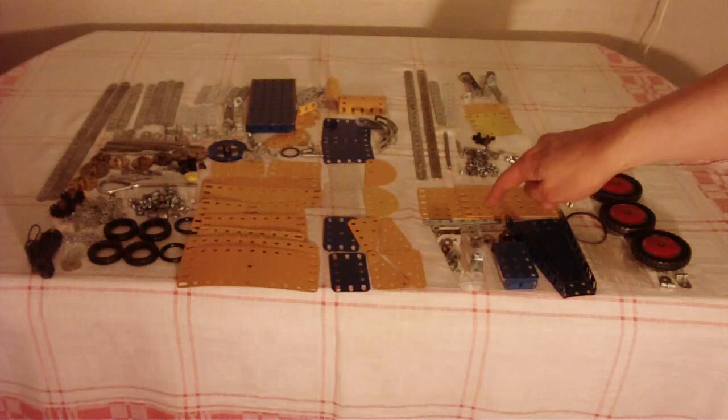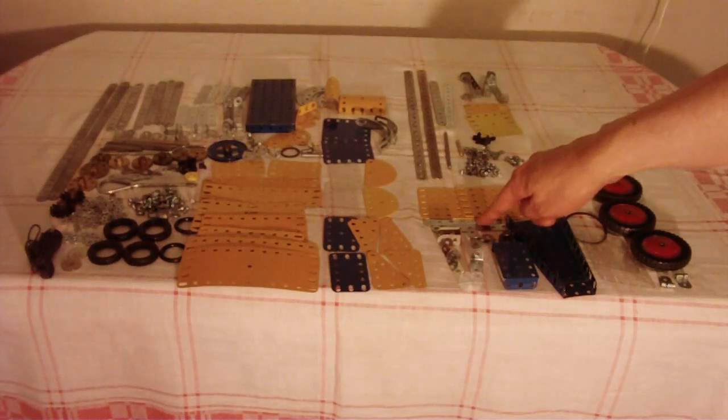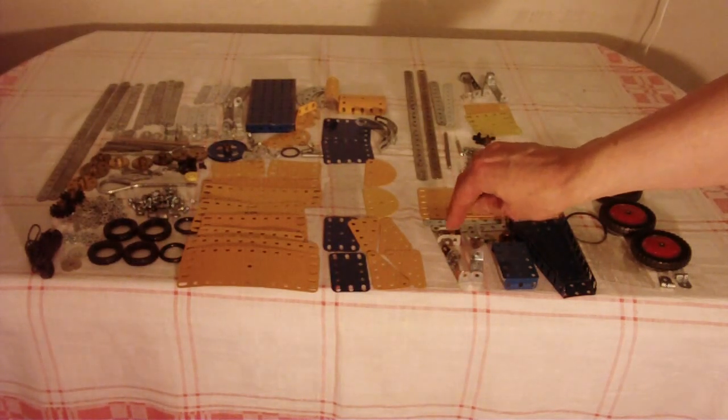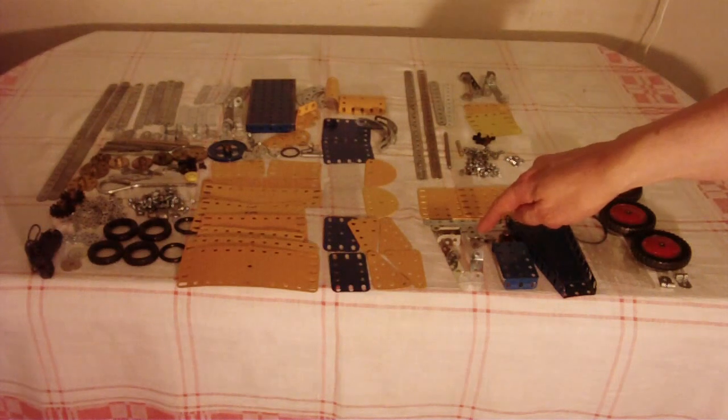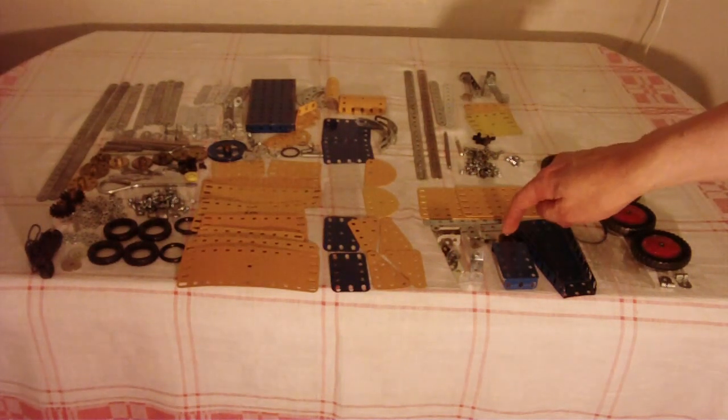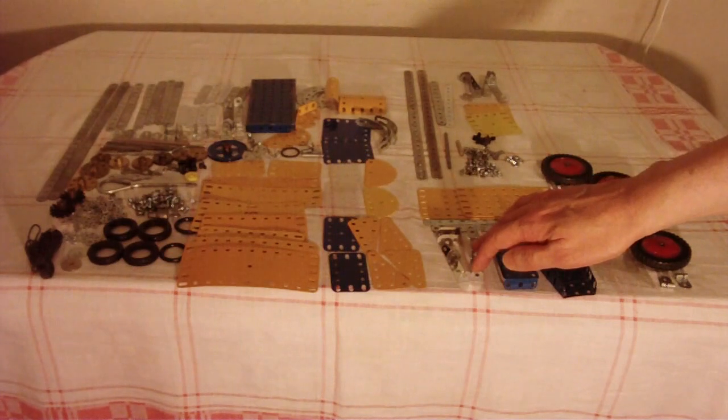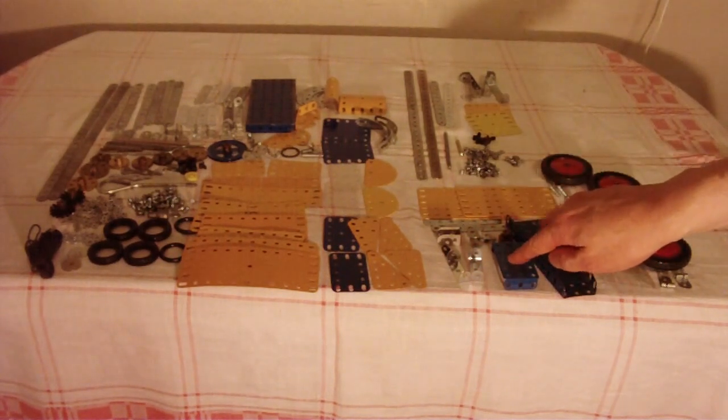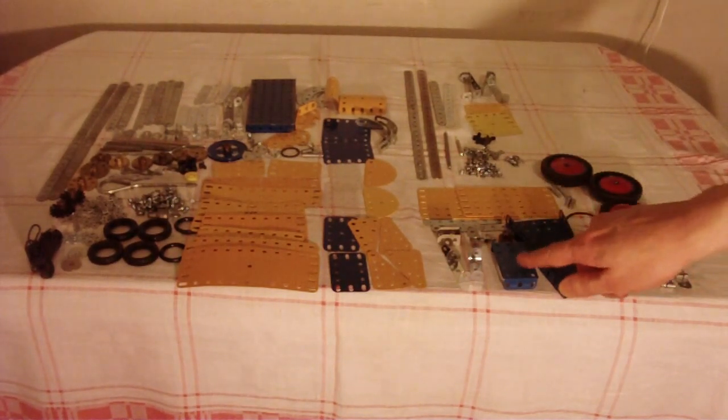2.5 by 4.5 inch flat plate, 3.5 inch strip, 1.5 inch by 1 inch double angle bracket, obtuse angle brackets, 1.5 inch pulley, 1.5 inch by 1.5 inch double angle strip, 2.5 by 1.5 inch flange plate.